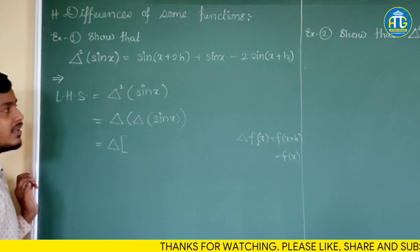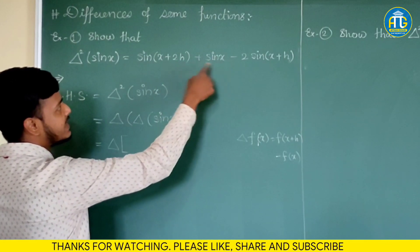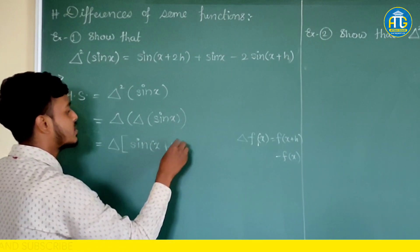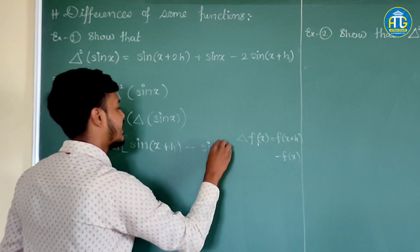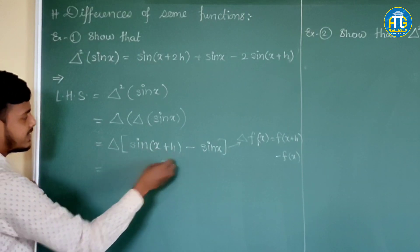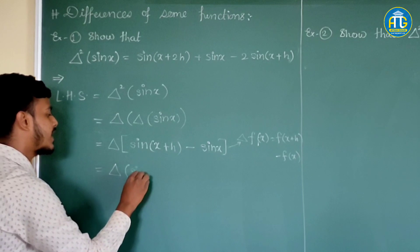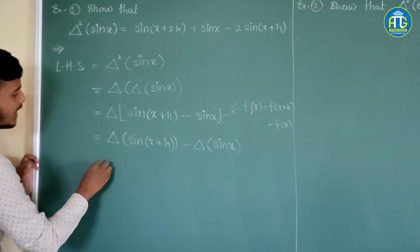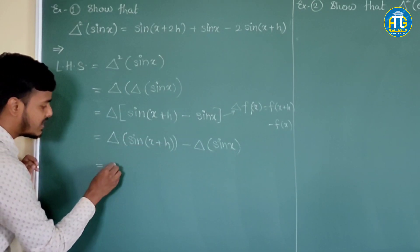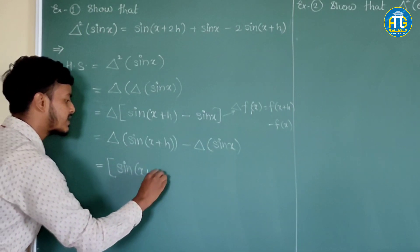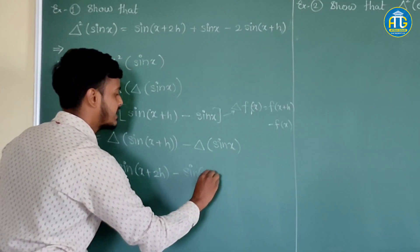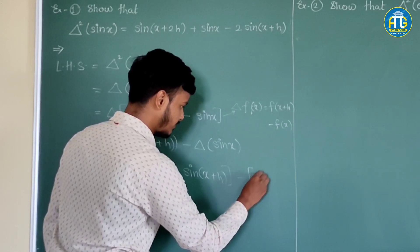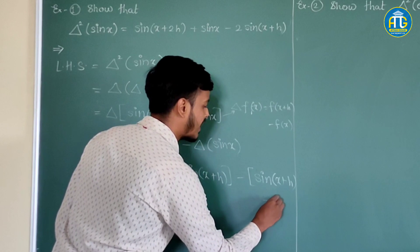You may be wondering about the interval of differencing — it is h. Now take the forward difference of the first forward difference: that is, Δ[sin(x+h)] minus Δ[sin(x)]. The first forward difference of sin(x+h) is sin(x+2h) − sin(x+h), and applying forward difference to sin(x) gives sin(x+h) − sin(x).